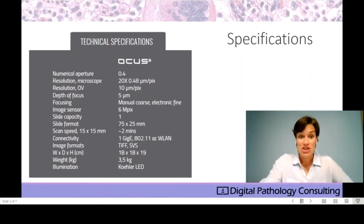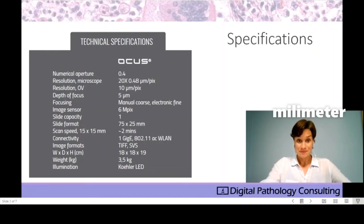The specifications: things that are very important for me is that the resolution is 0.48 micrometers per pixel, which is comparable to what other high throughput or multi-slide scanners are doing with the 20x objective. And it takes around 2 minutes to scan a 15x15 millimeter specimen. And you can have different image formats: TIFF, Pyramid TIFF, or an SVS file. And it just weighs 3.5 kilos. It's small, 3.5 kilos, that's less than 8 pounds. And 18 times 18 times 19 centimeters, less than 8 inches. So you saw how small it was.